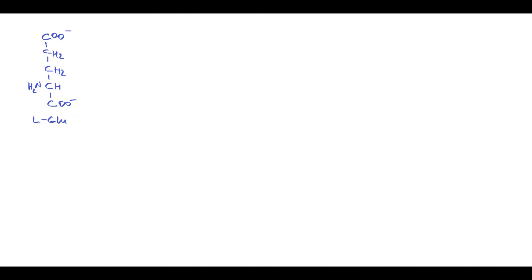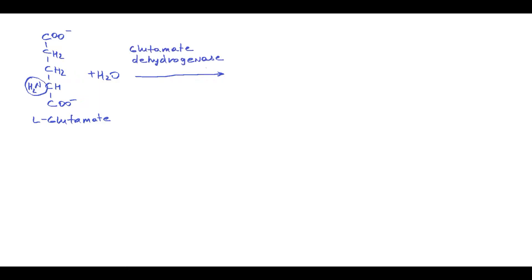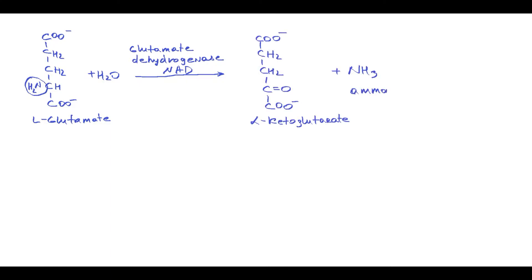To explain amino acid deamination, let's take a glutamate molecule. The nitrogen group of glutamate can be removed by oxidative deamination, catalyzed by glutamate dehydrogenase, which uses NAD as a coenzyme. Oxidation of glutamate results in the formation of alpha-ketoglutarate and an ammonia molecule.